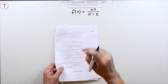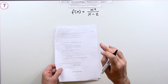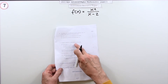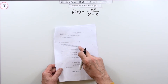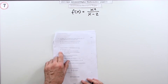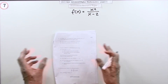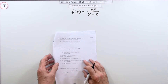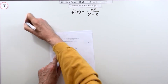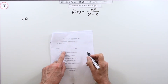Question seven from paper one of the 2021 Advanced Higher Maths resource paper - a six mark question. It's a graph of a rational function, but you don't have to do an awful lot; you don't have to find the stationary points, which is generally the biggest part of it.